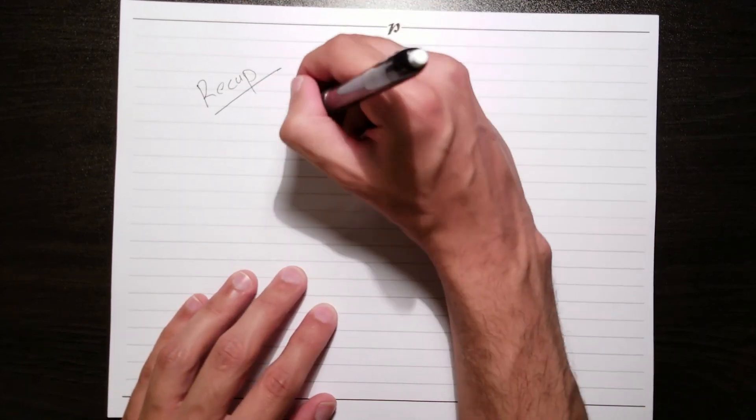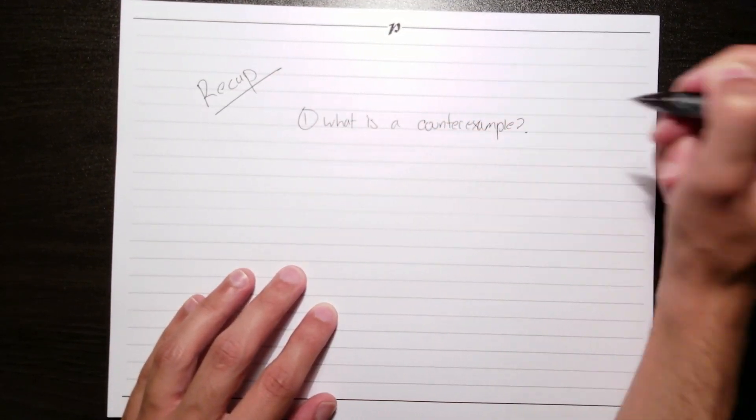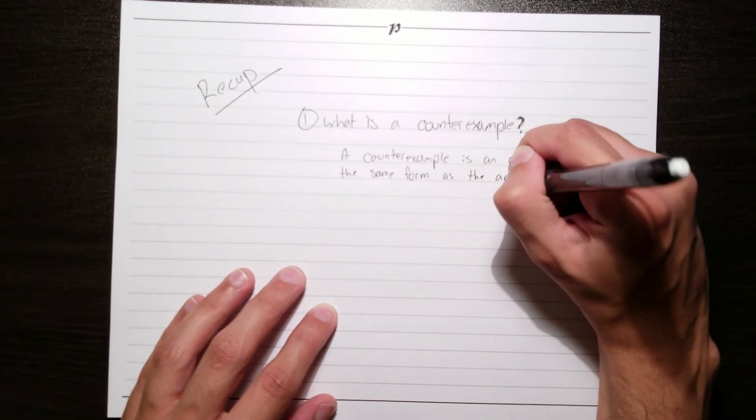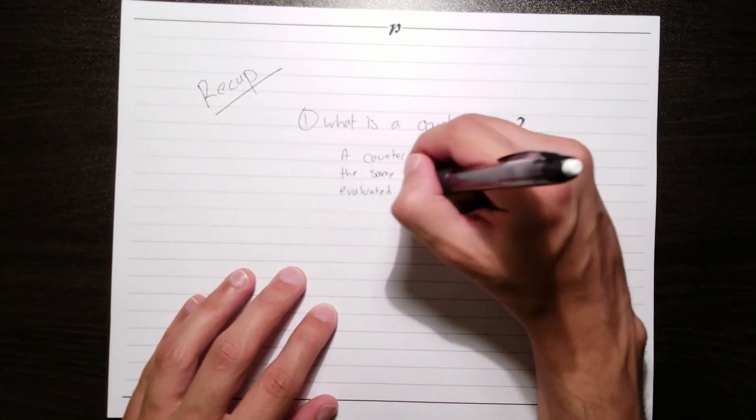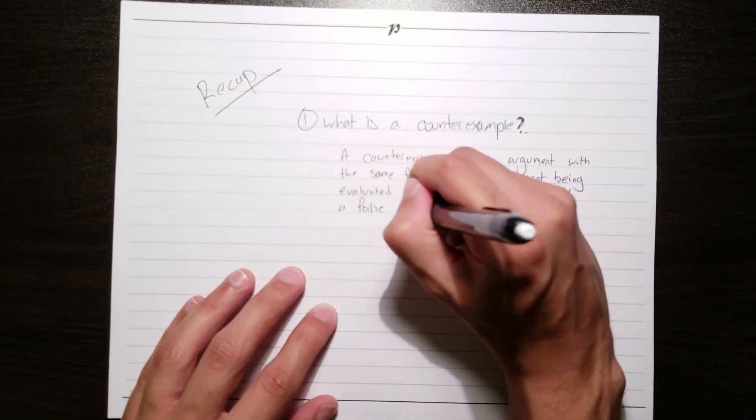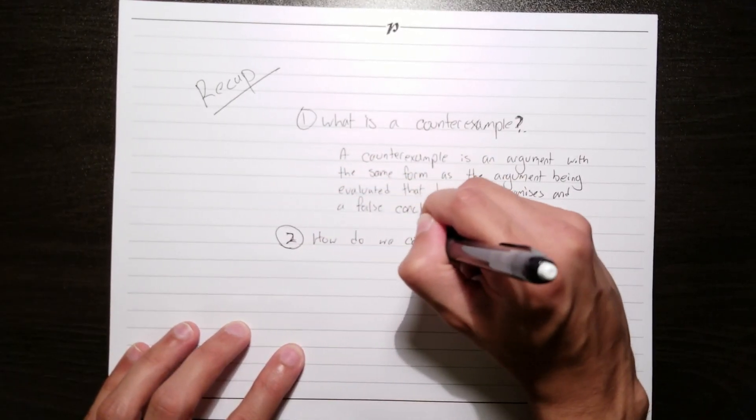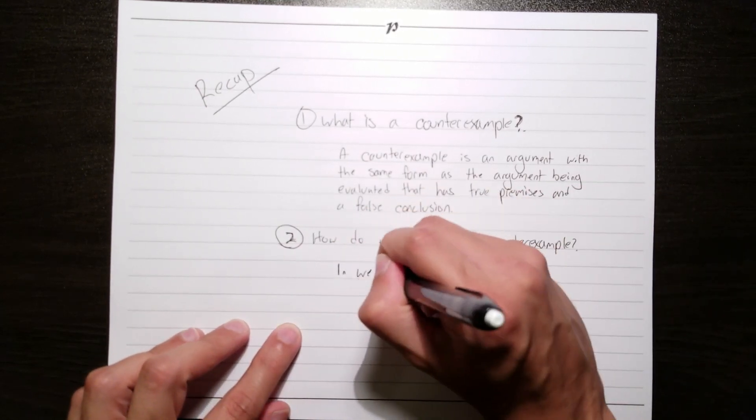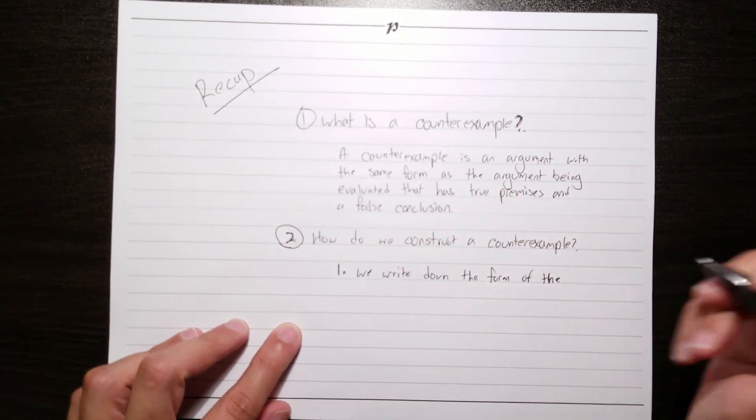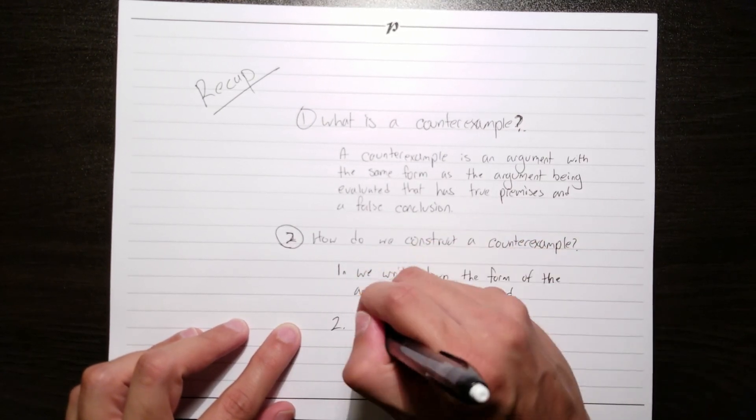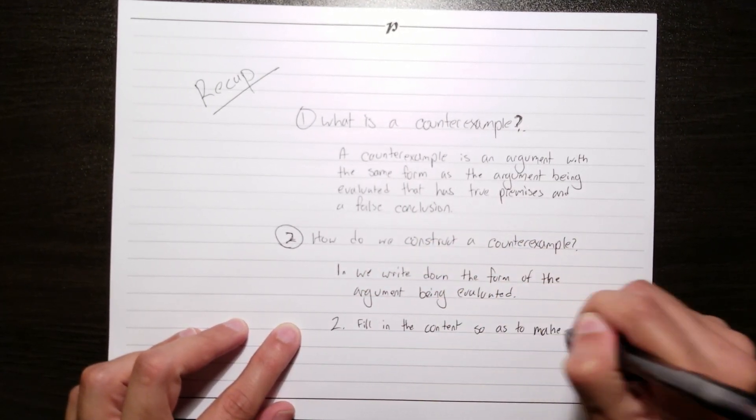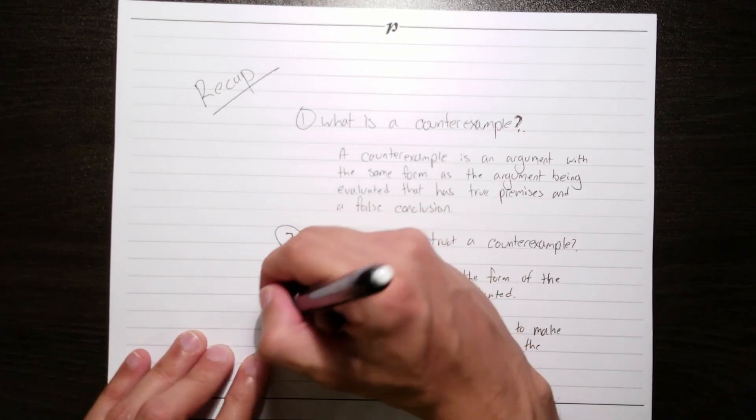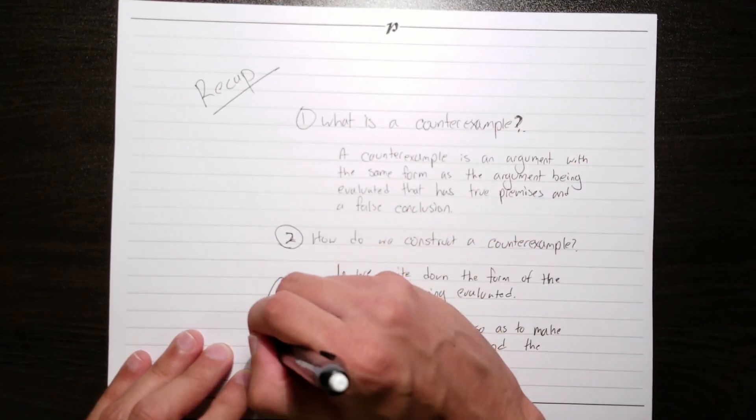Let's recap. Our first question was, what is a counterexample? And we answered that a counterexample is an argument with the same form as the argument being evaluated that has true premises and a false conclusion. Our second question was, how do we construct a counterexample? The answer here was that first, we write down the form of the argument being evaluated. And then second, we fill in the content so as to make the premises true and the conclusion false. If we succeed in doing this, we can safely say that the argument is invalid.